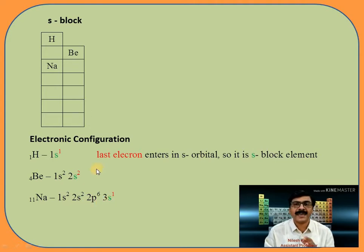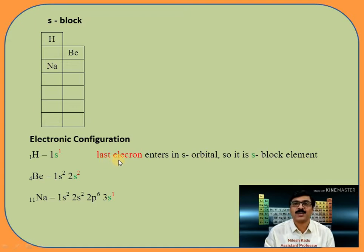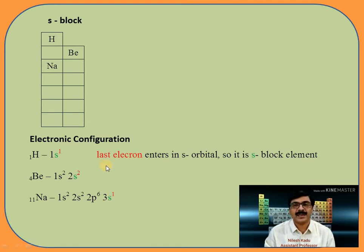Now observe the last shell. In hydrogen, the last shell is the s orbital. Beryllium contains 2s orbital and sodium contains 3s orbital — the last electron enters in the s orbital. In hydrogen, last electron enters in 1s; in beryllium, in 2s; in sodium, in 3s. So when the last electron enters in s orbital, it is called an S block element.